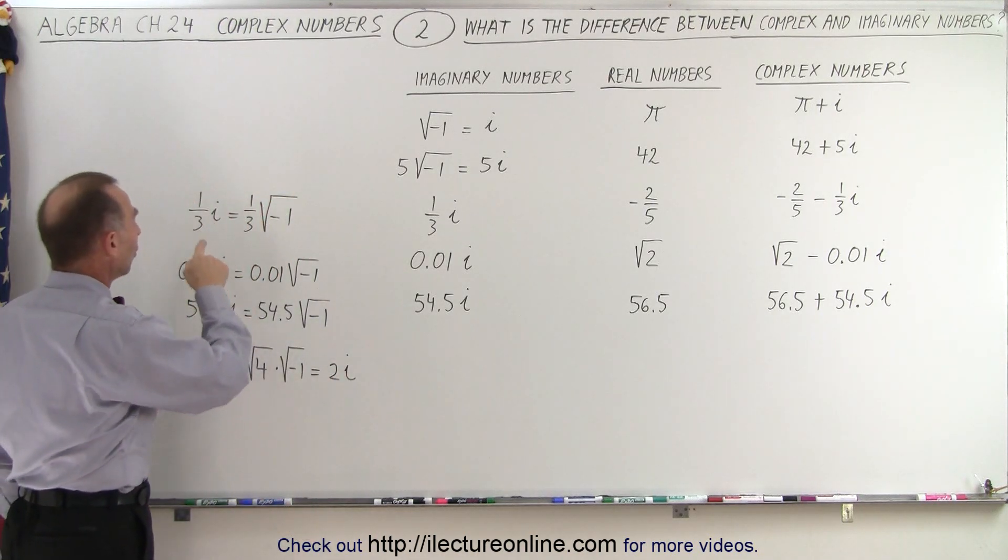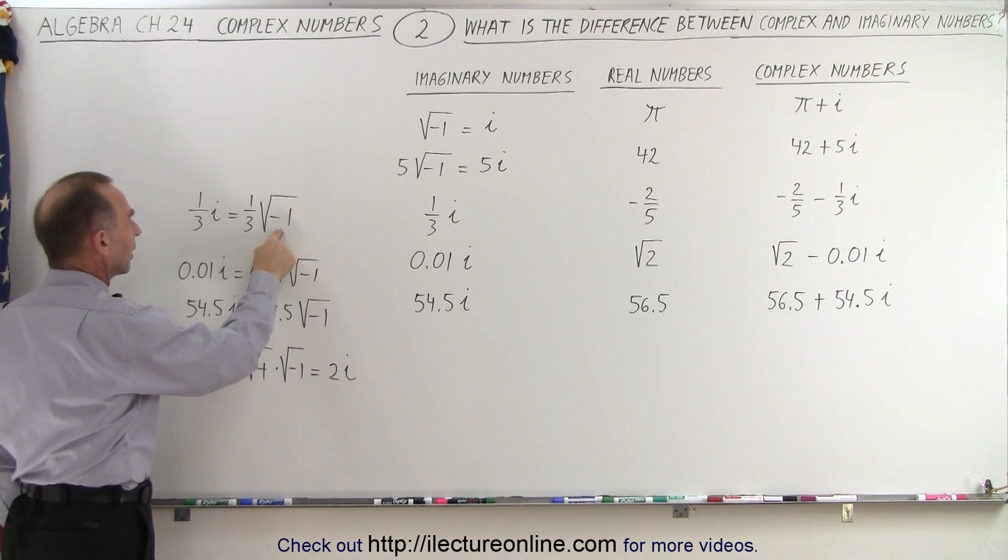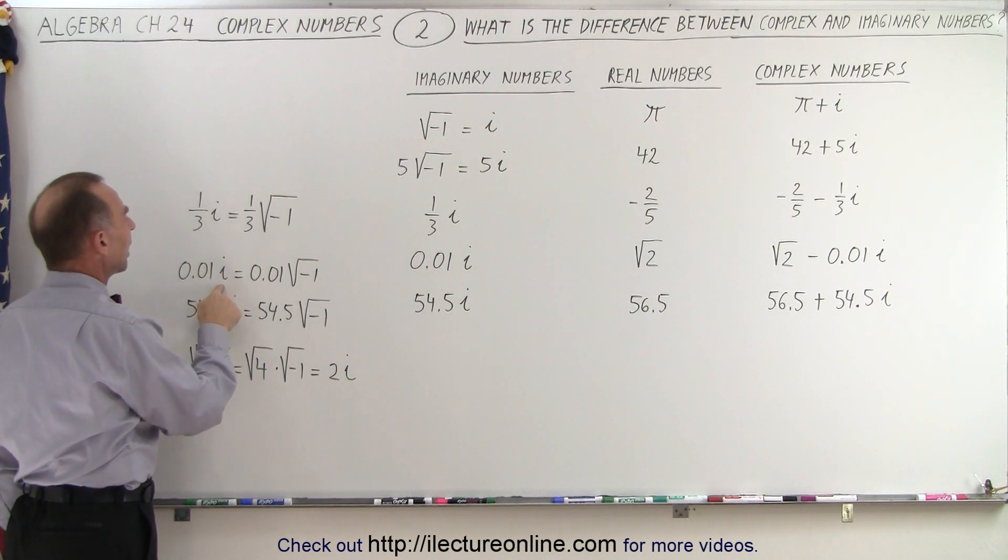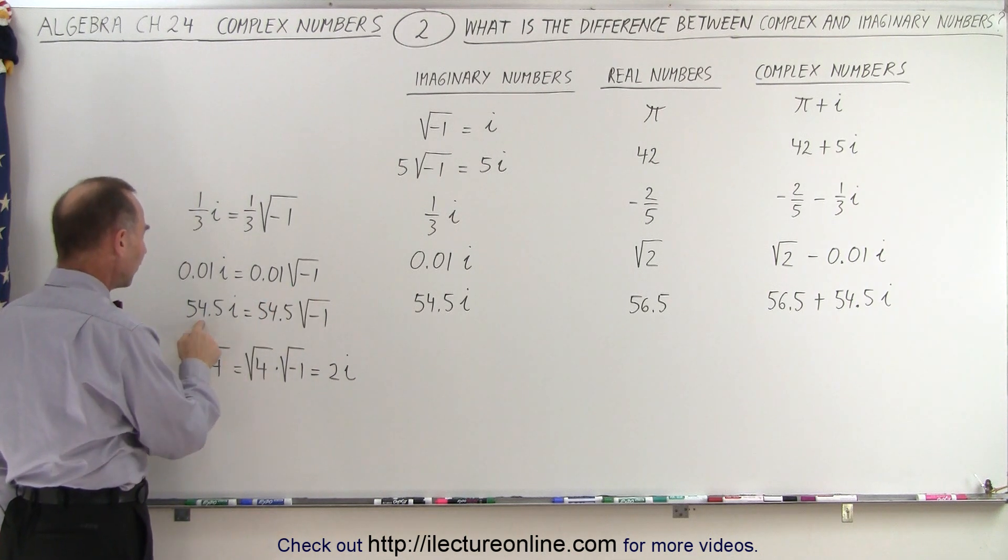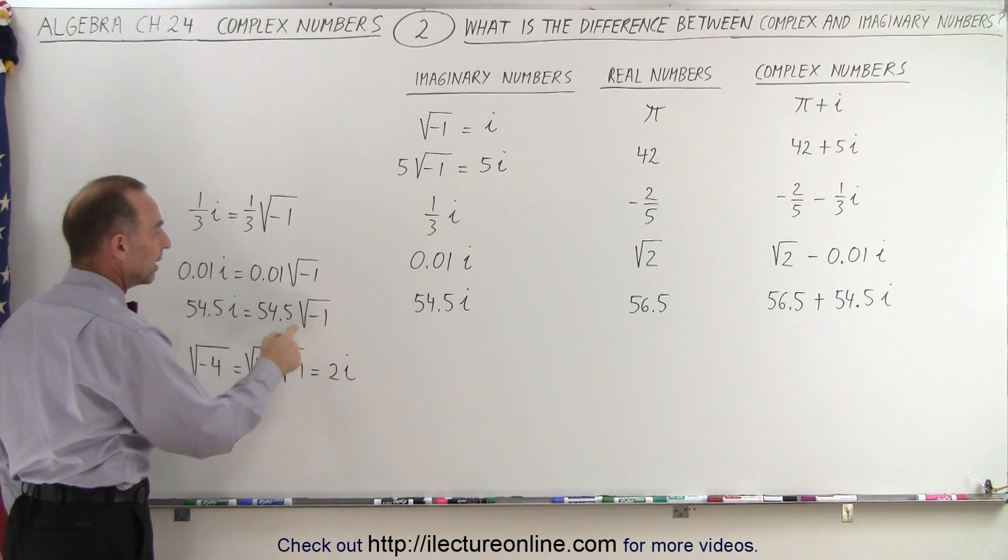Now notice that one-third i is one-third the square root of negative 1. 0.01i is the same as 0.01 times the square root of negative 1. Or 54.5i is the same as 54.5 times the square root of negative 1.